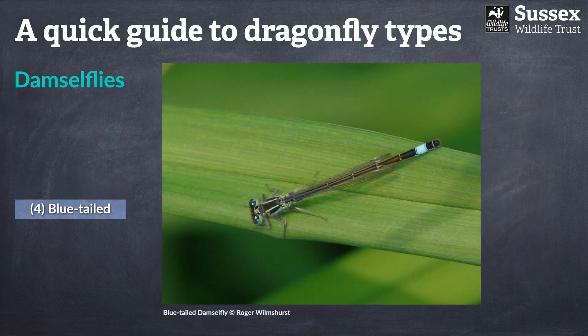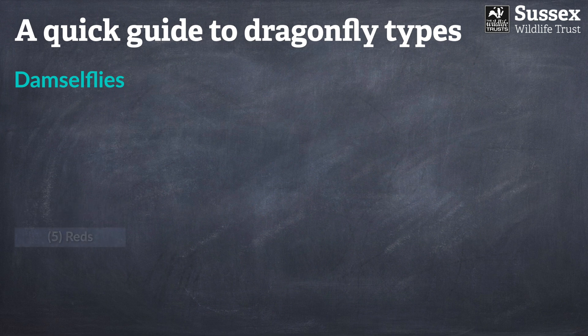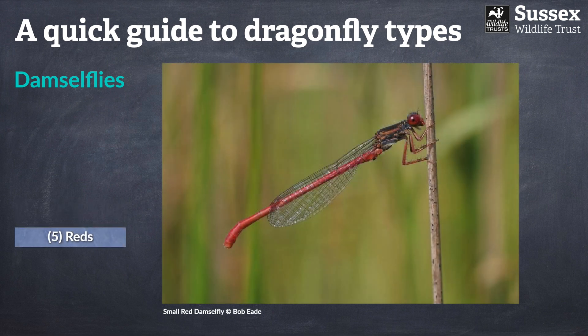Sticking with the blue theme, we also have two species of blue-tailed damselfly. One of these two species is actually one of the very commonest damselflies in the UK and is definitely likely to be one you will have encountered before. Sticking with the colour theme, we also have the red damselflies — just two red damselflies in the UK — and in much the same manner as the blue-tailed, one of the red damselfly species is also incredibly abundant, one of our very commonest species.